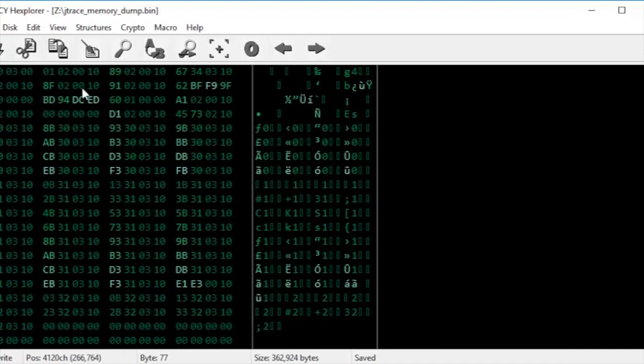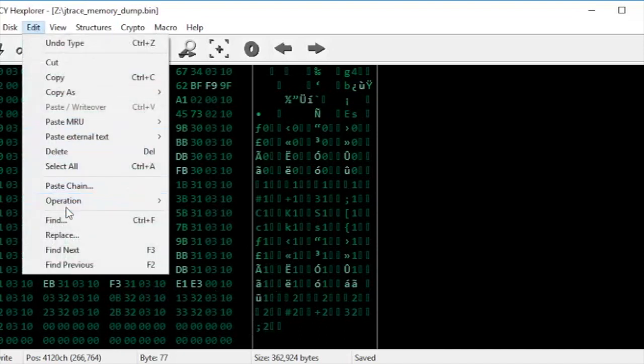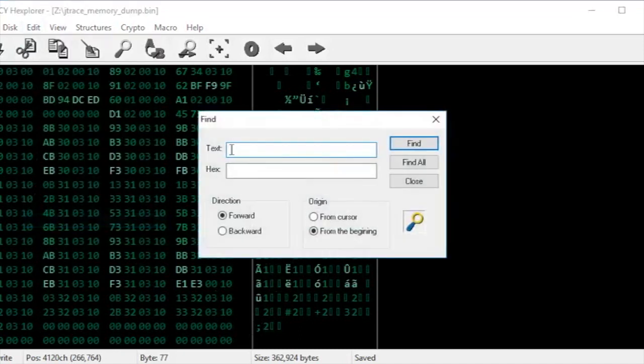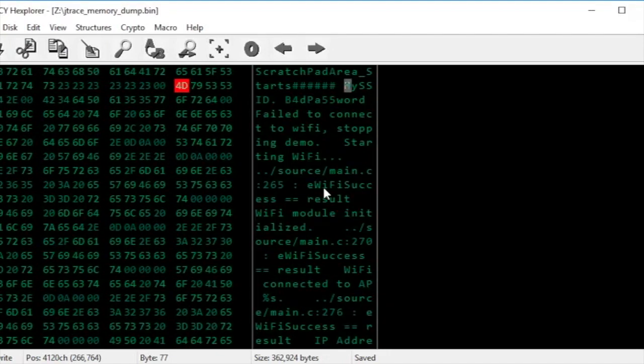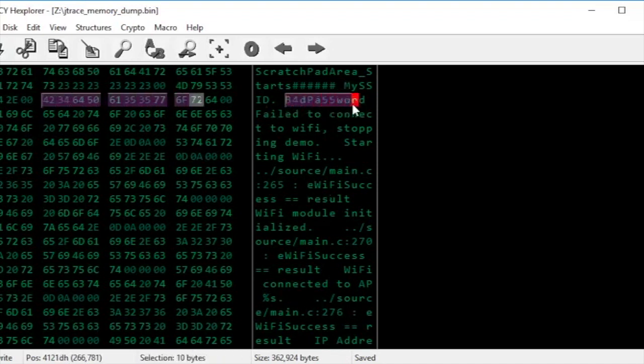Now I have the binary file. It's simple to open it in Hex Explorer and investigate the contents. And I searched for my Wi-Fi SSID. And there, stored in flash, in plain text, is my Wi-Fi SSID and my Wi-Fi password.